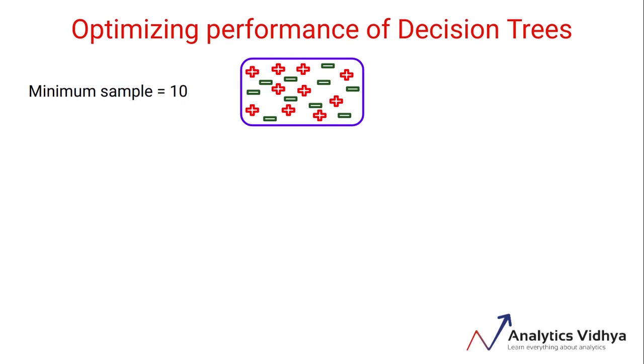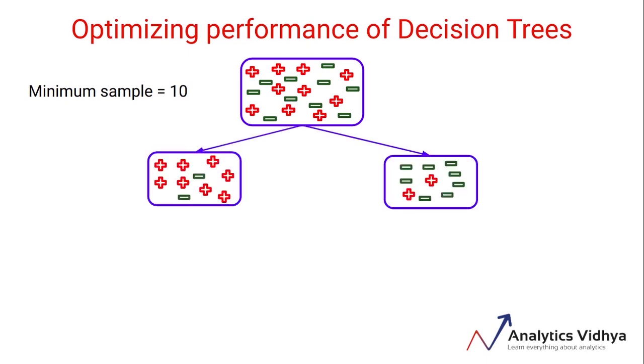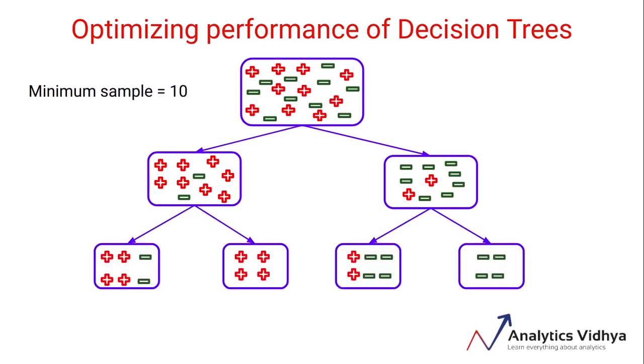This is the population. As there are more than 10 samples in this node, it will split further. Now both of these sub-nodes do have 10 samples, so the splitting will continue. In this case, none of the nodes have 10 samples, that's why there'll be no further split and the tree will not grow any further. This is how setting the minimum samples for a node split works.